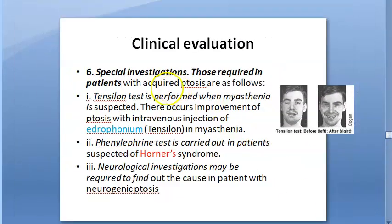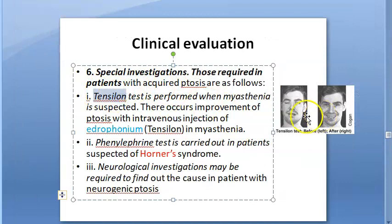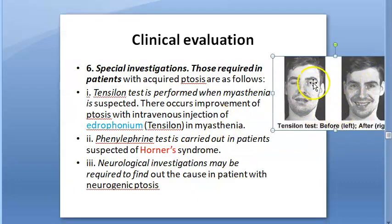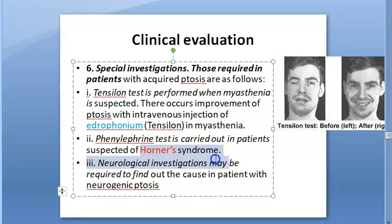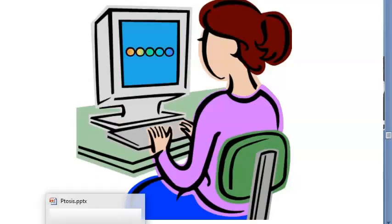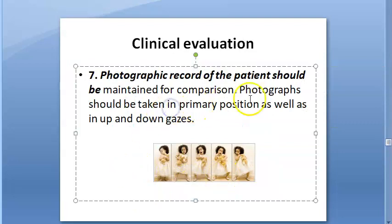For special investigations: if myasthenia gravis is suspected, perform the Tensilon test — an intravenous injection of edrophonium (Tensilon) is given and the ptosis should temporarily improve. For Horner's syndrome (oculosympathetic paresis), phenylephrine, cocaine, or apraclonidine tests are used. Neurological investigations are performed to identify which nerve is affected in neurogenic ptosis.